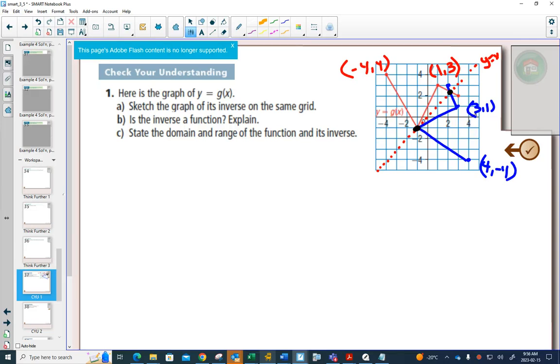So if you turn your page so that y equals x was a horizontal line, can you see that the red one has been flipped over to match the blue one?